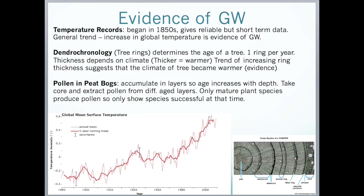There are three main things we need to know when it comes to evidence of global warming: temperature records, tree rings, and pollen in peat bogs.